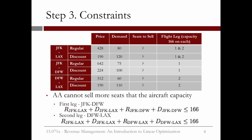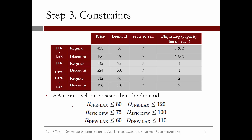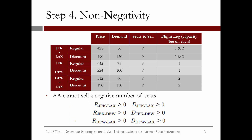And like before, we have two types of constraints: capacity constraints and demand constraints. For the capacity constraints, the airline shouldn't sell more seats than the capacity of the plane for each leg of the trip. So we need two capacity constraints here — one for the New York to Dallas leg, and one for the Dallas to LA leg. Note that the New York to LA passengers have to be counted on both legs of the trip. We also need six demand constraints, one for each type of ticket. The number of seats sold should not exceed the forecasted demand for each type. And lastly, we have non-negativity constraints to prevent the variables from being negative.